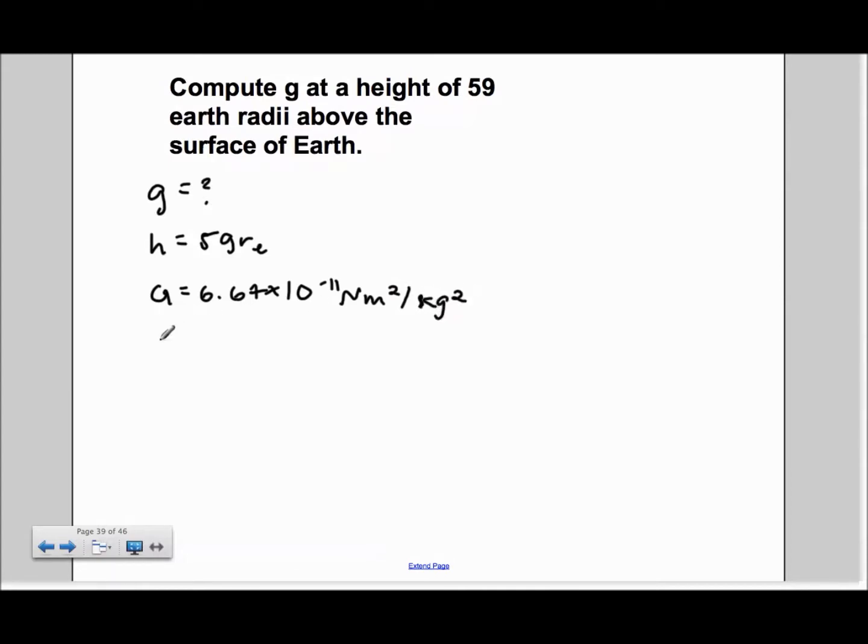In order to find g, we use the formula g is equal to GM over R squared.